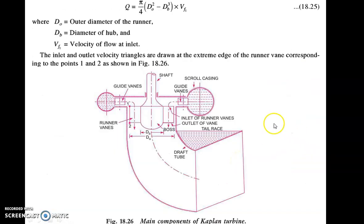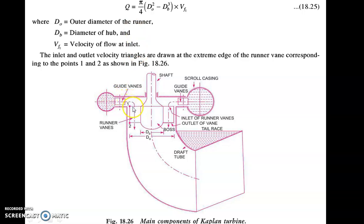Let us see the block diagram for the Kaplan turbine. There is a shaft, a boss or hub, and a casing. Water comes from the penstock through the casing to the guide vanes. The guide vanes direct the water at 90 degrees to the runner vanes. The runner vanes are mounted on the shaft. Points 1 to 2 represent the runner inlet and runner outlet. The flow turns through 90 degrees and then becomes completely axial — that is why it is called an axial flow turbine. Both inlet and outlet are in the axial direction.